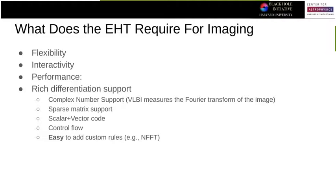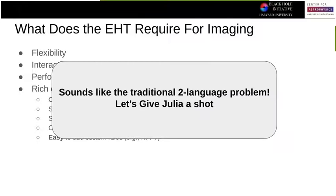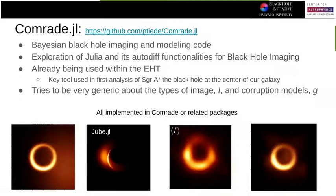We have a mixture of scalar and vector code. These ray tracing models are heavy control flow — JAX's static graph really struggles with this because the function you trace depends on some while loop that will terminate depending on where you are and what the black hole parameters are. We also want easy-to-add custom rules. I don't want to spend a week trying to figure out some super hard C++ code. So for me, this sounded like a two-language problem — and people in Julia land always tell me this is what Julia is supposed to solve, so I thought I'd give Julia a shot.